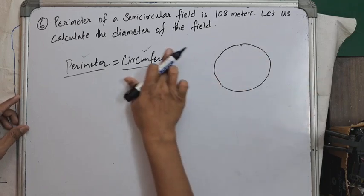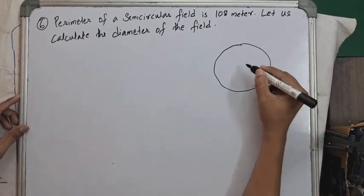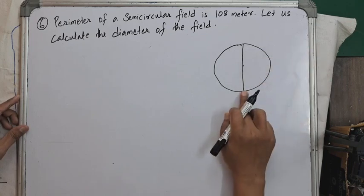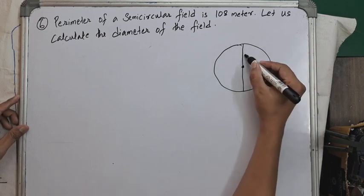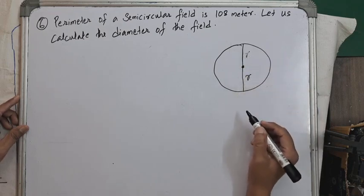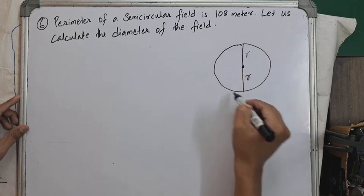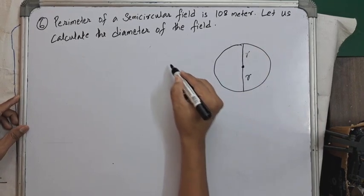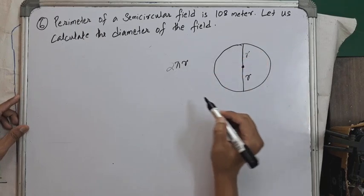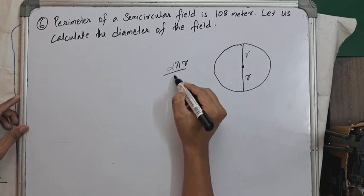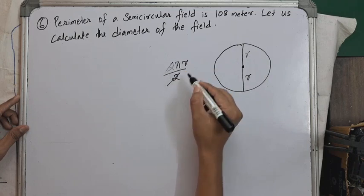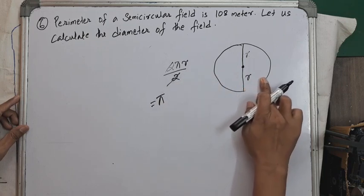Let us draw a circle with a center. The diameter means two times the radius — one radius on each side. The circumference or perimeter of this full circle is 2πr. Since 'semi' means half, dividing by 2 cancels to give πr as the length of the curved part of a semicircle.